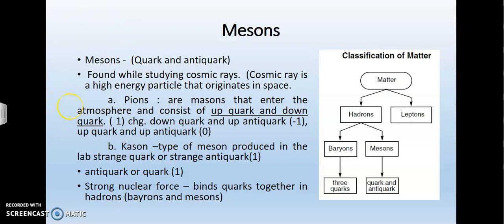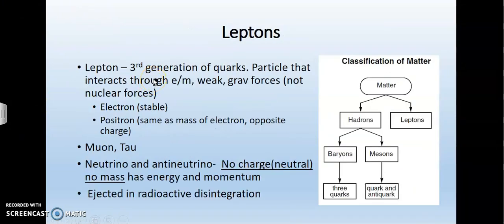Finally, we're going to discuss the lepton. I did mention this earlier - the lepton is the third generation of particles. It's a particle that interacts through electromagnetism, weak gravitational force, but not the nuclear force. The most famous one is the stable electron. The next most famous one is the anti-electron, which is given the fancy name of positron. It has the same mass as an electron but it is the opposite charge. So an electron has a charge of negative one, a positron, as its name implies, has a charge of positive one. The muon and the tau are also leptons. The neutrino and the anti-neutrino have no charge, no mass, and they have energy and momentum. All these particles are ejected in radioactive disintegration. This is the energy that escapes when it is disintegrated or cracked open in an atom smasher during atomic collision.